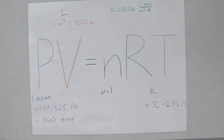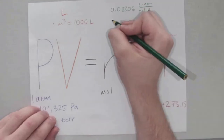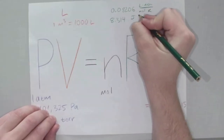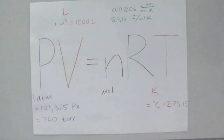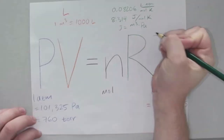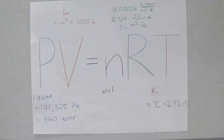As long as we have pressure, volume, moles, and temperature in those units, we can use that R constant and everything will stay consistent. Another common value for R is 8.314 joules per mole·Kelvin, where joules is also equal to m³·Pa. So if we used cubic meters for volume and Pascals for pressure, we could use that gas constant.